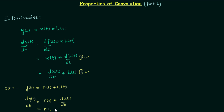So we have r(t) convolved with δ(t). From the 4th property in the last lecture, if a signal x(t) is convoluted with δ(t) then we get x(t) itself. So here r(t) convolved with δ(t) gives us r(t) as the value of dy(t)/dt. So the unit ramp signal is our answer — when you differentiate y(t) with respect to t one time you get the ramp signal.